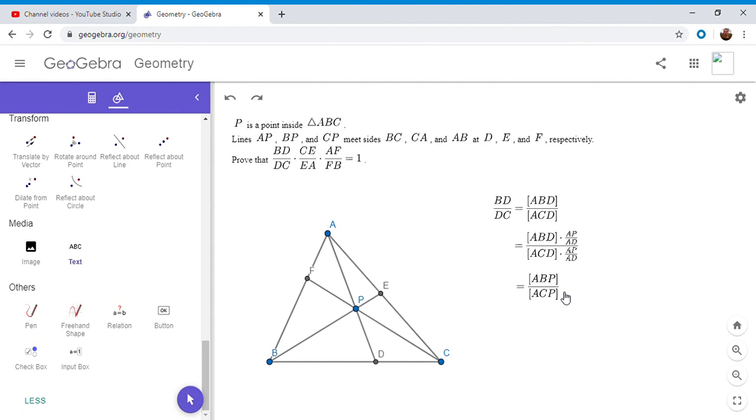And this is starting to look very symmetric and very convenient. So we can do the same thing that we did with BD over DC, this fraction. We can do the same thing for CE over EA and AF over FB. So when you do that, you get these ratios.